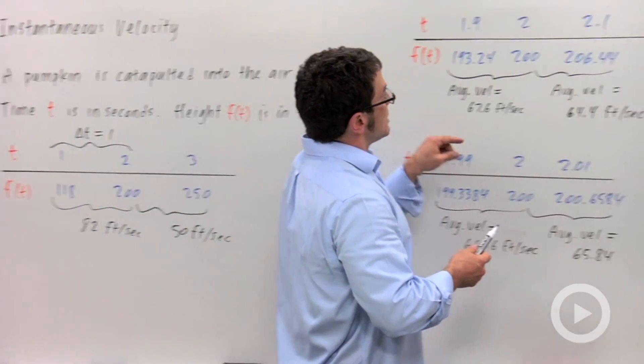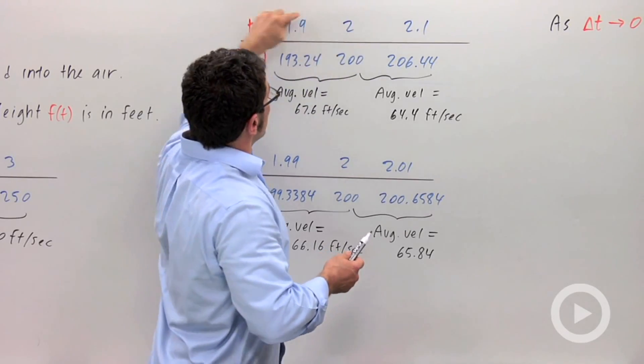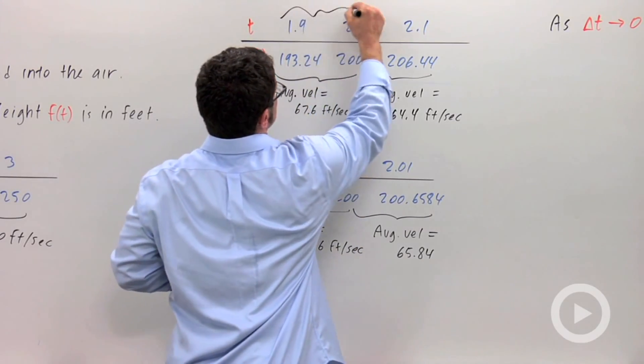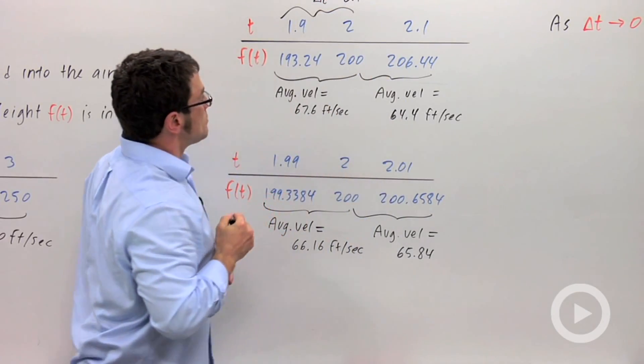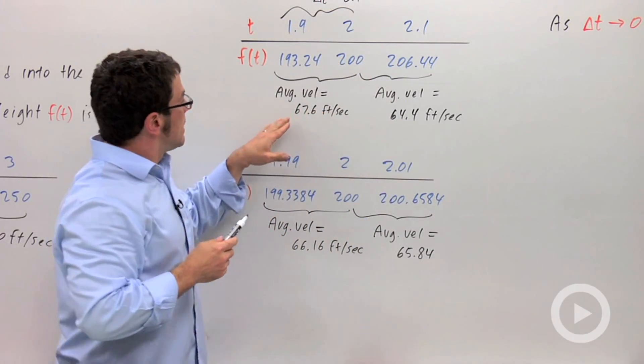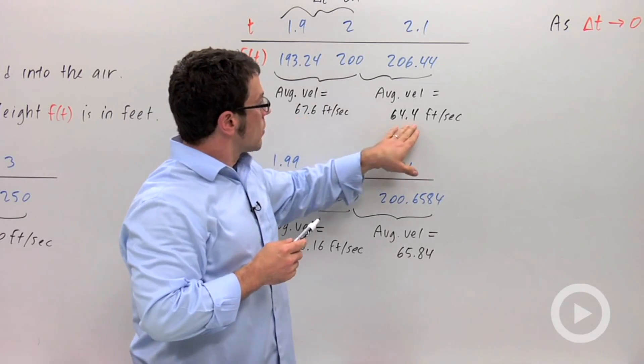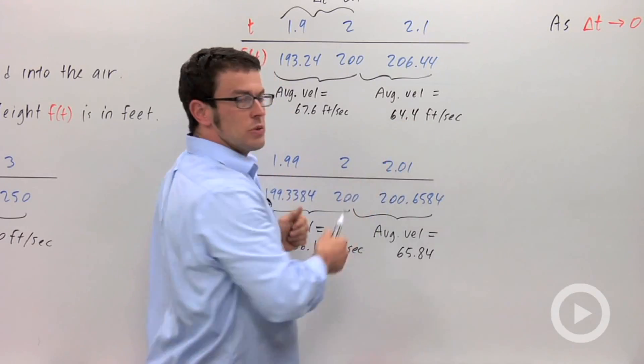So here I have a table that includes t equals 2. But now I have a point on the left and a point on the right that are much closer to 2, 1.9. This is a delta t value of 0.1. Now what are the average velocities? On the left I get 67.6 feet per second. And on the right I get 64.4 feet per second. These values are getting a lot closer to each other.